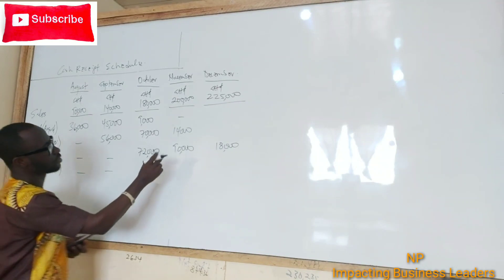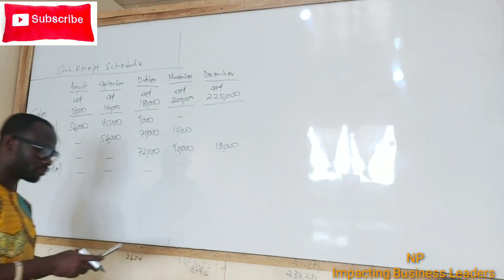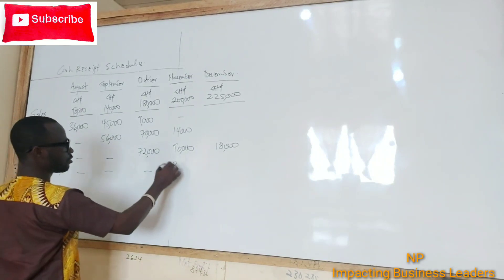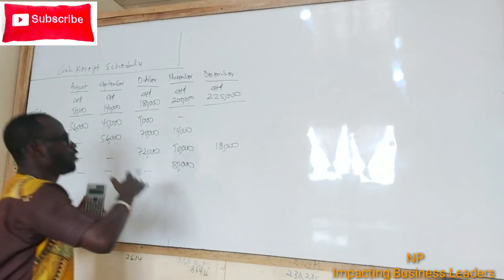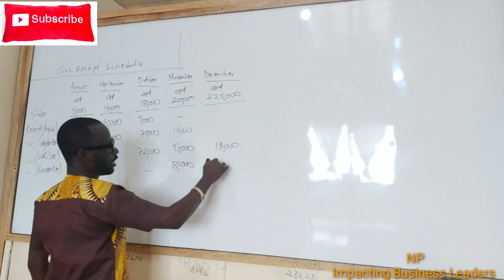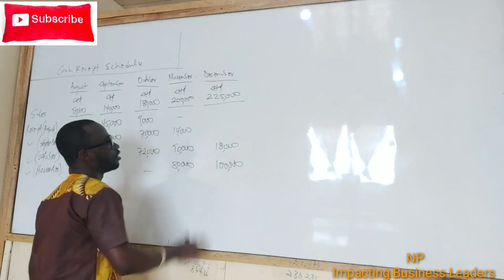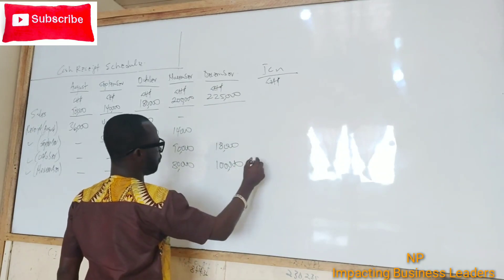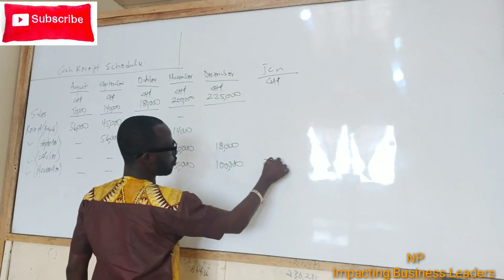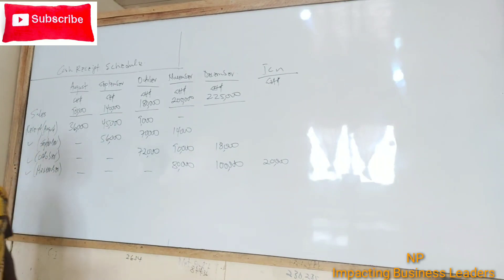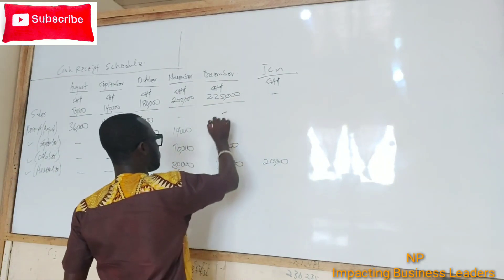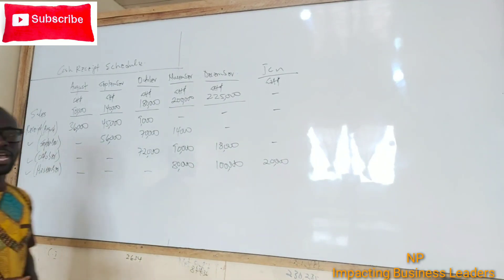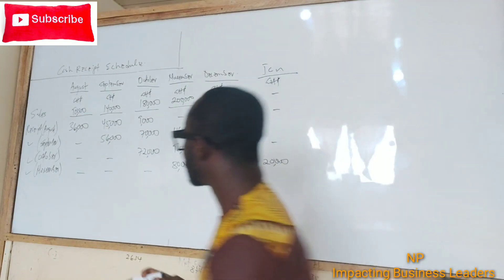November sales: 40% is received in November, which gives us $80,000. Then 50% will be received in December, which is $100,000. And the 10% will be received in January, which is $20,000. That covers November's sales collections.